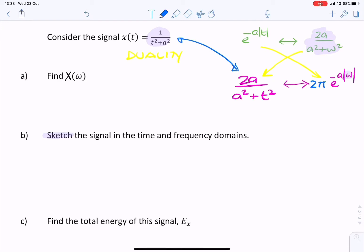Now these two look very similar, except we need a 1 in the numerator. So we can achieve that easily by dividing by 2a. And now these are identical. So if this is x(t), this will be x(ω).